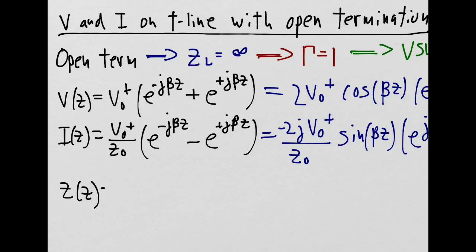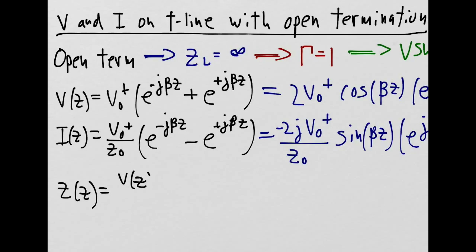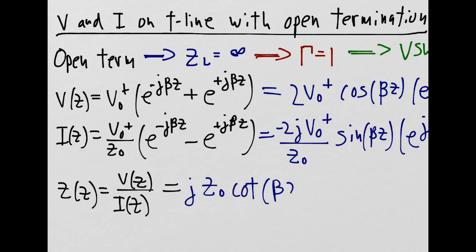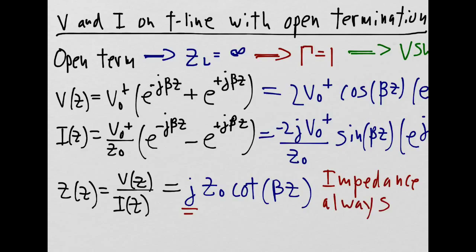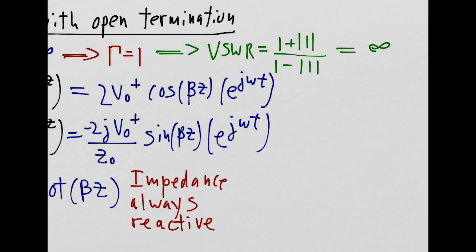Now I can write an expression for the impedance, defined as V of z divided by I of z. This can be simplified to a cotangent function. Notice the j in front, which means that the impedance is purely imaginary and purely reactive, which also implies that there is no real power transfer happening — something we're going to look at in more detail later.